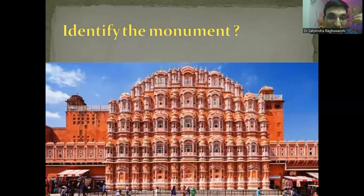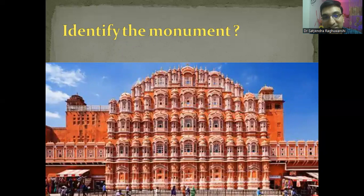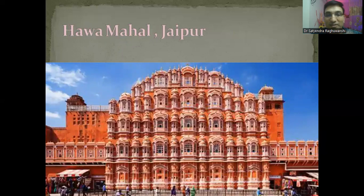Just to refresh your mind: please identify this monument and in which city it is located. I'm sure most of you must have identified it correctly — it is Hawa Mahal in Jaipur. When you are in Hawa Mahal, you feel a relaxing cool breeze from all sides. So just relax your mind a little bit, then we'll go on to the next table viva item.